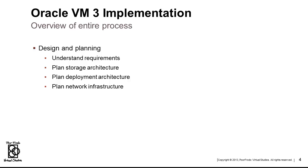We begin with the design and planning phase, which includes understanding the requirements for networking and storage needed by the business systems. Then you need to plan the storage architecture, which includes deciding what storage protocols will be used, creating naming conventions for volumes, LUNs, and NFS exports, deciding how you will present pool file systems in the repositories to the servers, and calculating space needed for the pool file systems and repositories.